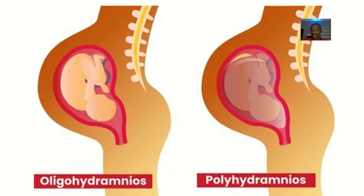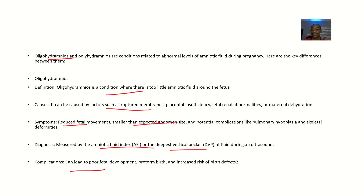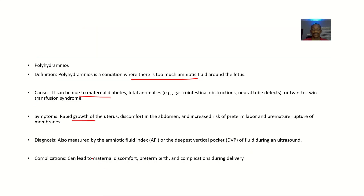Diagnosis of oligohydramnios is measured by the amniotic fluid index or the deepest vertical pocket. Complications include poor fetal development, preterm birth, and increased risk of birth defects. For polyhydramnios, diagnosis is also measured by the amniotic fluid index or deepest vertical pocket.